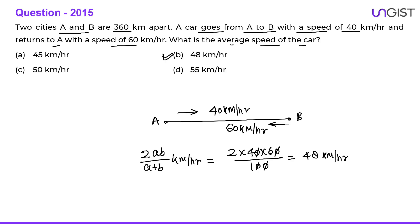The distance between the two stations is given as 360 kilometres, but actually in the formula this distance is not required. So in these type of questions, even if the distance is not given to you, you can still find the average speed. Distance is not required in this formula — always remember this.